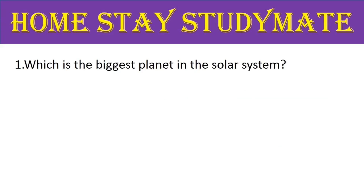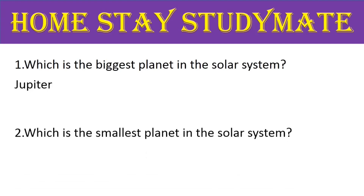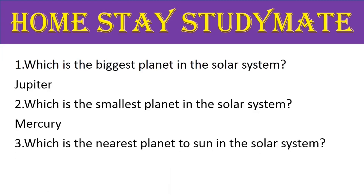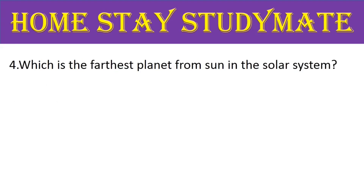Today's first question: which is the biggest planet in the solar system? The right answer is Jupiter. Next, which is the smallest planet in the solar system? The right answer is Mercury. Next, question number 3: which is the nearest planet to the Sun in the solar system? The right answer is Mercury.